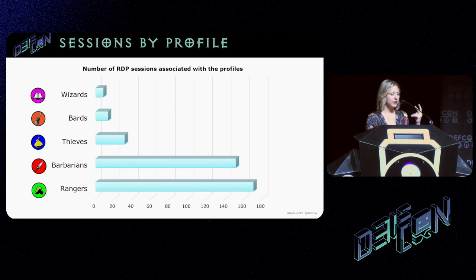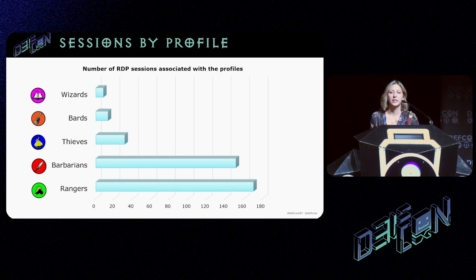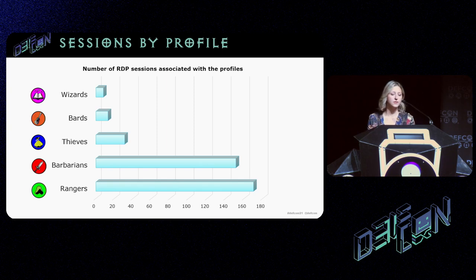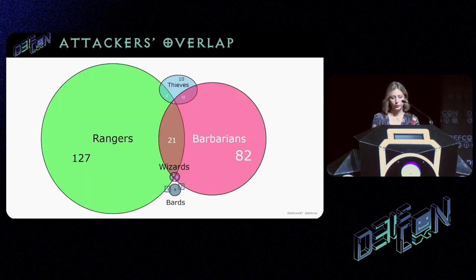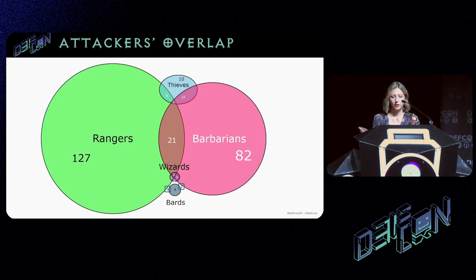Looking at the number of RDP sessions per profile: a lot of Barbarians, a lot of Rangers, then Thieves, Bards, and Wizards. The profiles are not mutually exclusive — they can intertwine. A Ranger might also perform Barbarian actions.